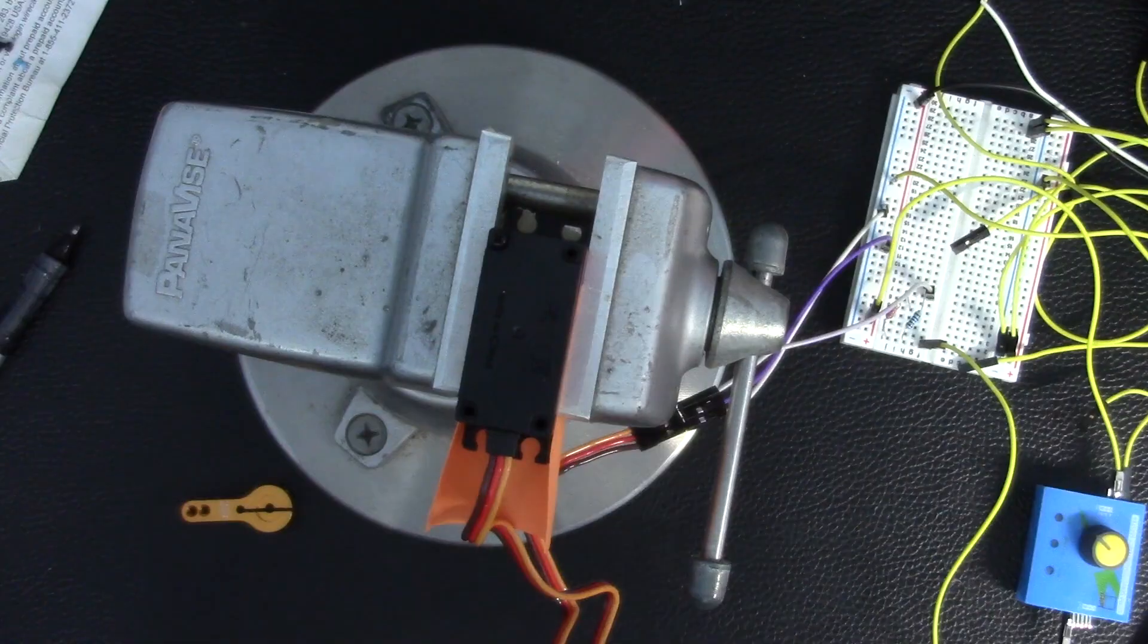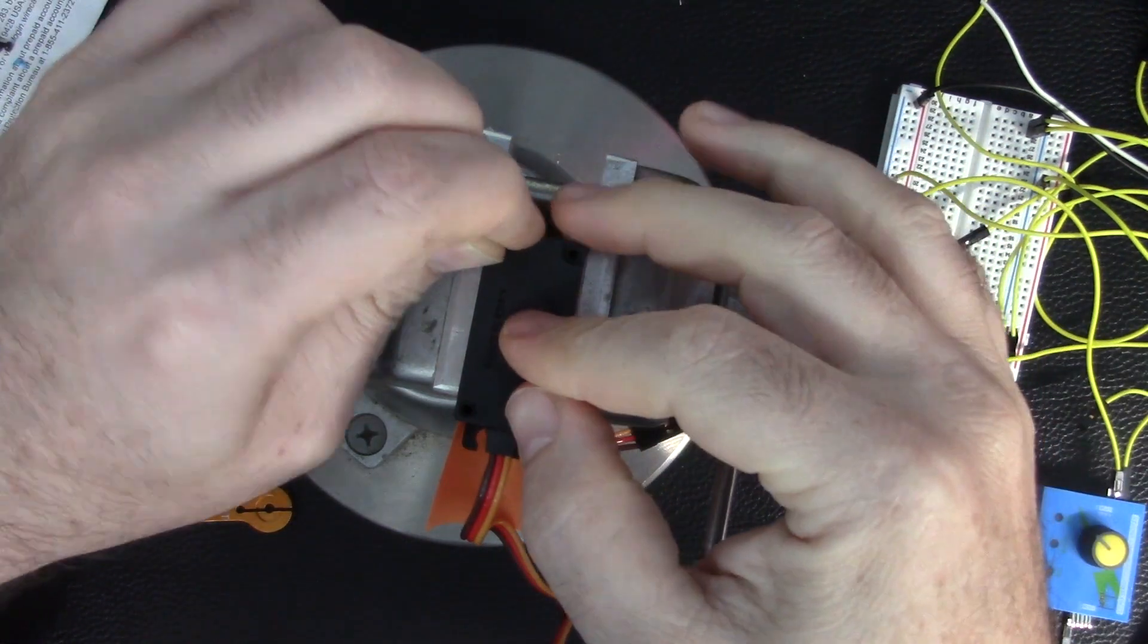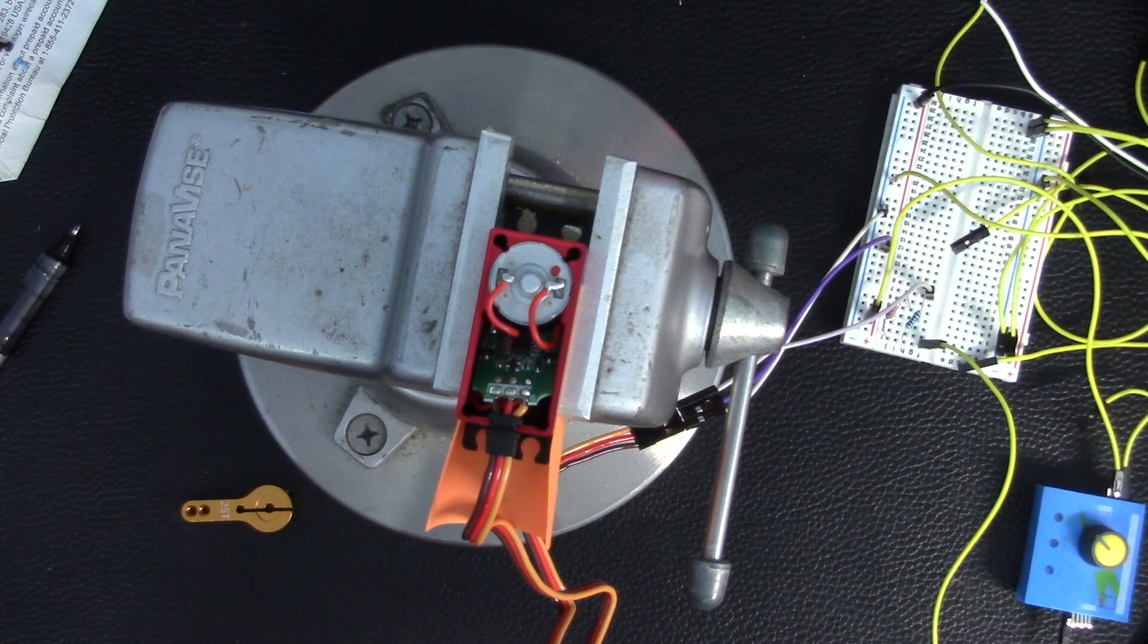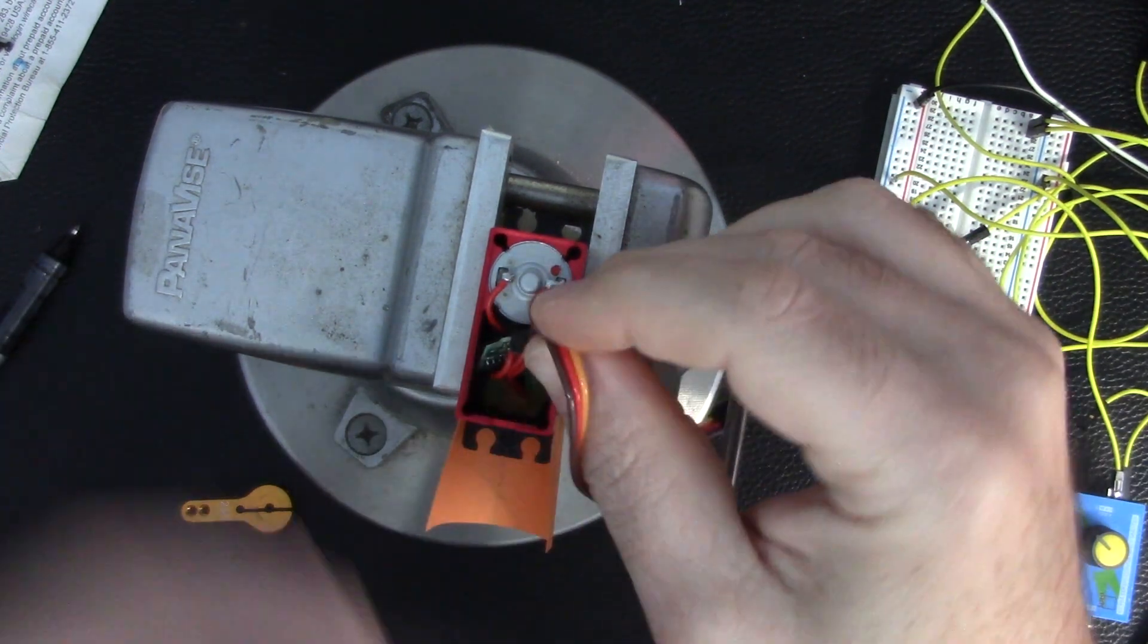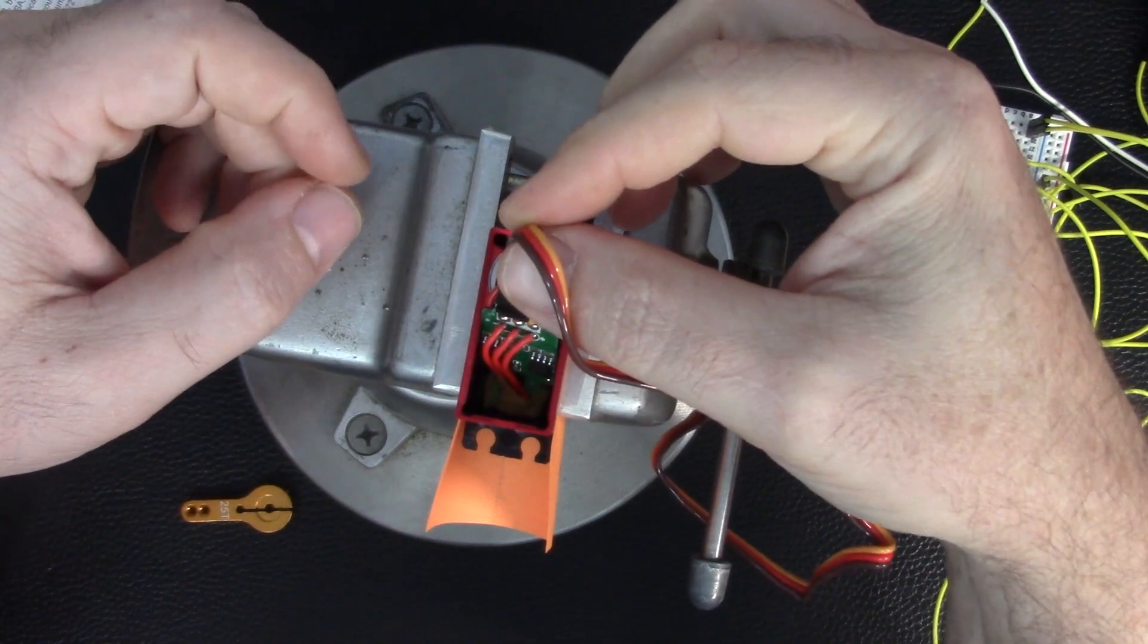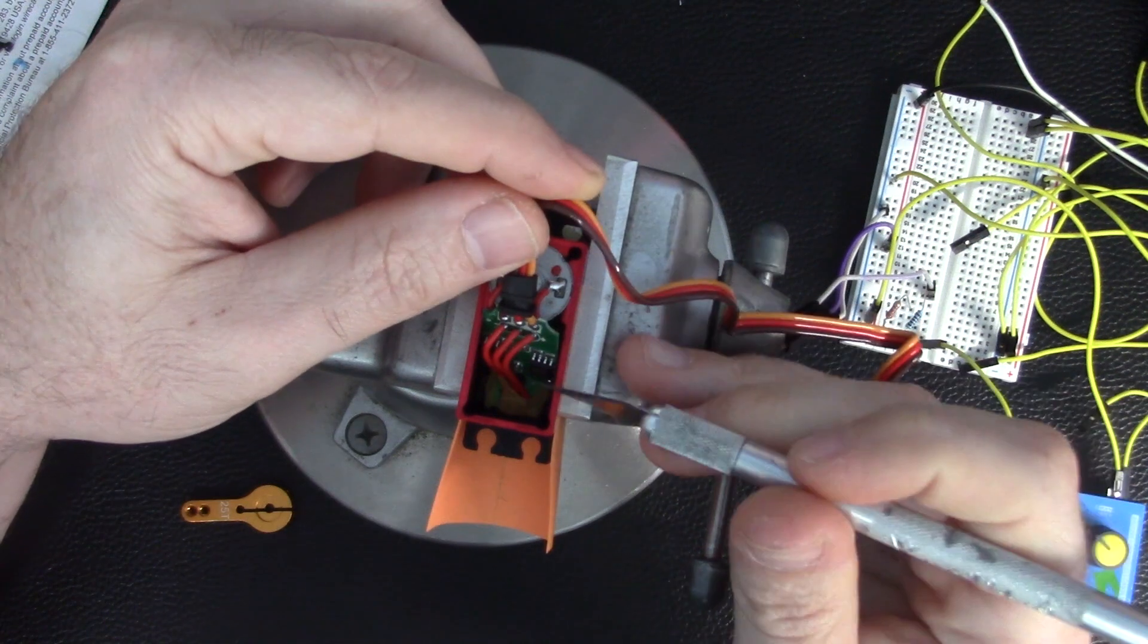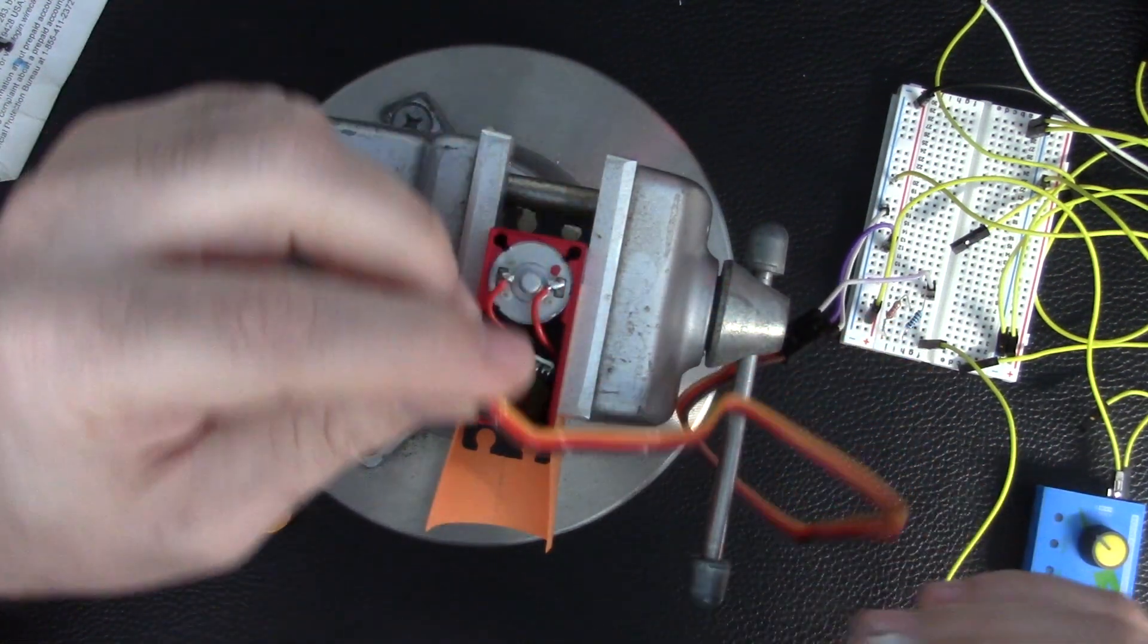We flip the servo over and we have to take off these four screws to get the face plate off. We have this breakout board that the cables feed into, and if we look in the bottom of this board, we have these three wires that go to the potentiometer in the base here.